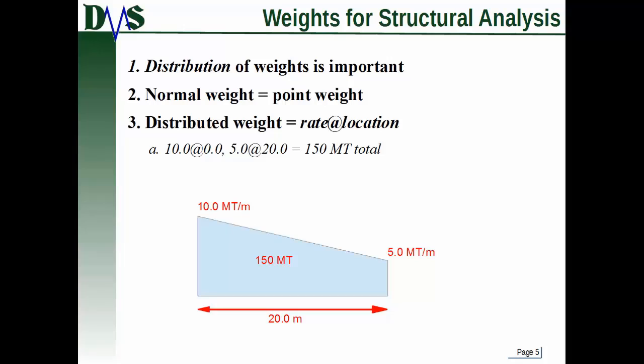That is to say that GHS thinks that all of that weight happens right at the center of gravity. Now that's the default behavior. You can also do in GHS what is called a distributed weight. Now the way that works is kind of different and you have to keep this in mind. A normal weight in GHS you just tell it what the total weight is.